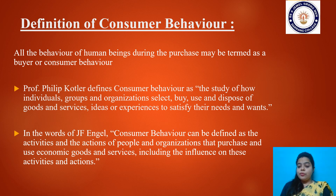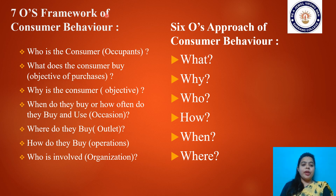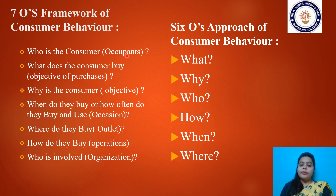For a better understanding of consumer behavior, we can look at the Seven O's framework. This framework defines very correctly what consumer behavior is. The first O is Occupant — who is the consumer? Who has the wants, or who wants to use something? They should be the occupant at that moment. The second O is Object — what does the consumer buy? Why do you go to buy some product or avail some service? This refers to the objective or motive behind every kind of process.